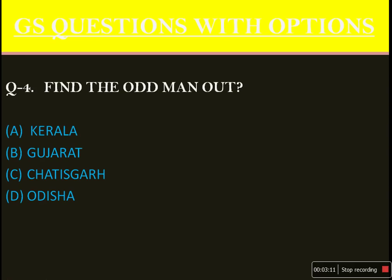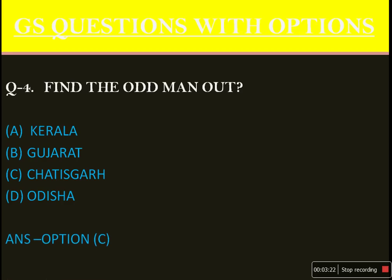Find the odd man out: Kerala, Gujarat, Chhattisgarh, Odisha. Simple one — because options A, B, and D are all coastal states. Chhattisgarh is landlocked. Hence the answer is option C.